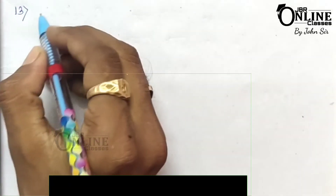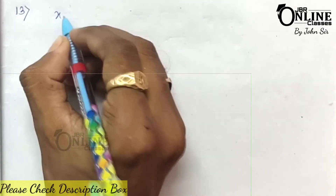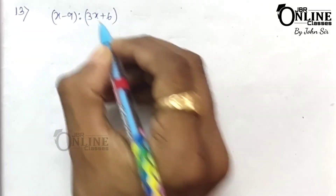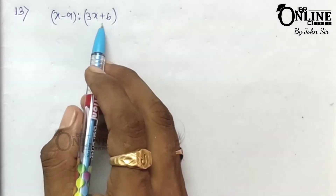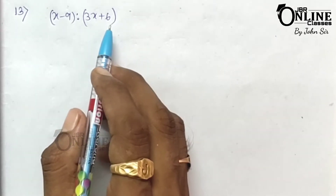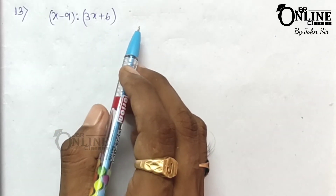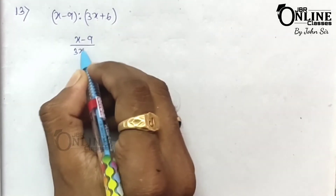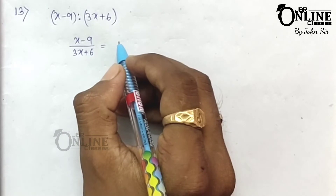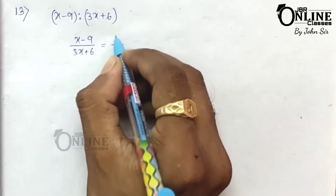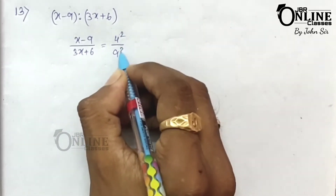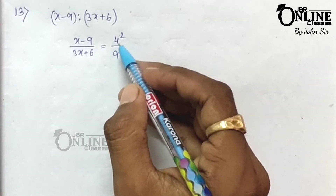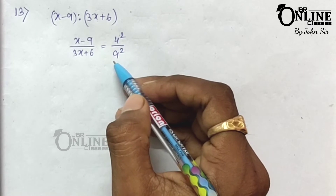Sum number 13, the first problem: if x minus 9 is to 3x plus 6 is the duplicate ratio of 4 is to 9. That means you can write x minus 9 by 3x plus 6 as a duplicate ratio of 4 is to 9, which means 4 squared and 9 squared. For a duplicate ratio, you have to square the numbers.